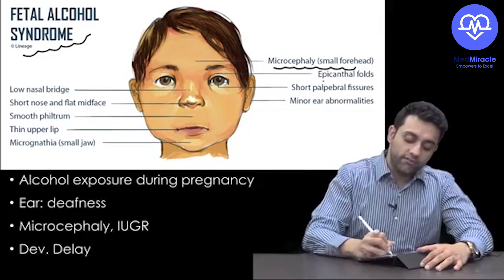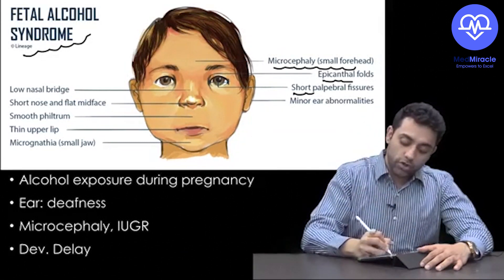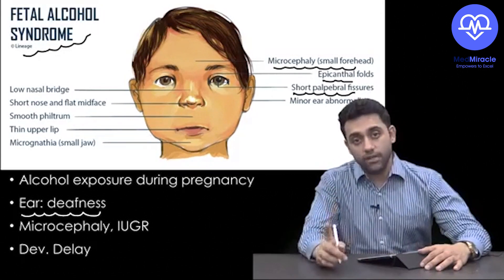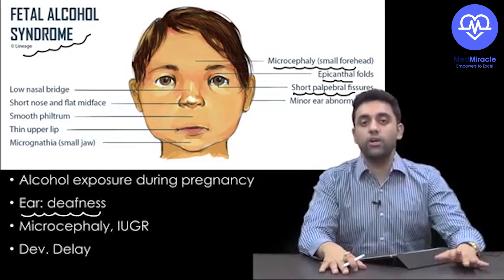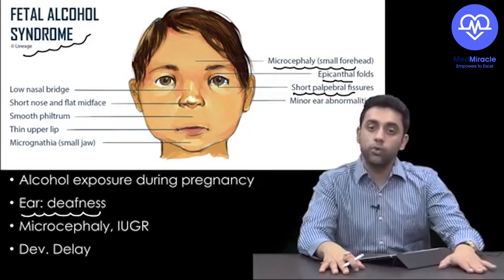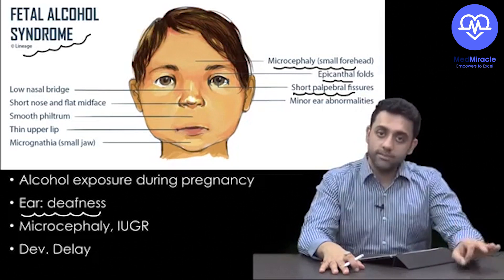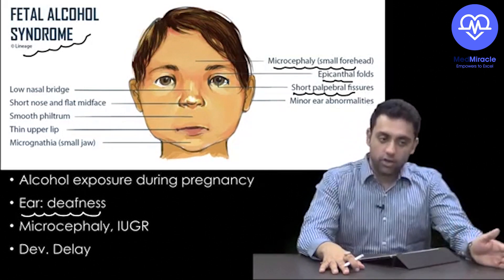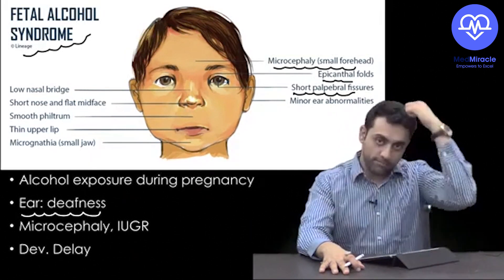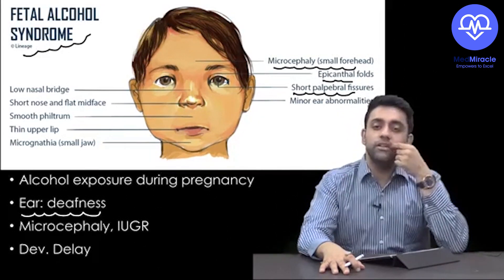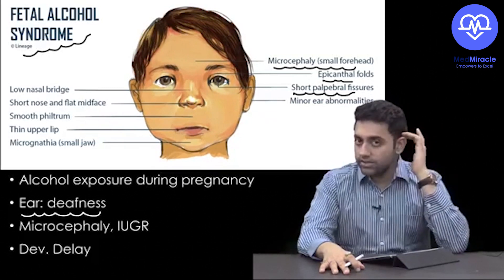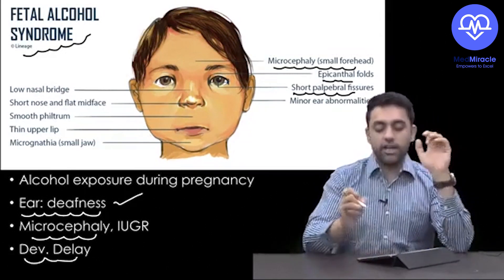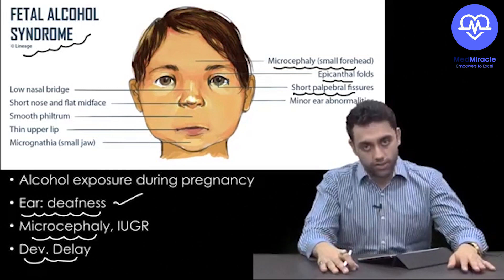Fetal Alcohol Syndrome causes microcephaly, epicanthal folds, short palpebral fissure, and deafness. To summarize: mother taking alcohol leads to Fetal Alcohol Syndrome in the baby — presenting with microcephaly, epicanthal folds, smooth philtrum, thin upper lip, depressed nasal bridge, low-set ears, deafness, and developmental delay.